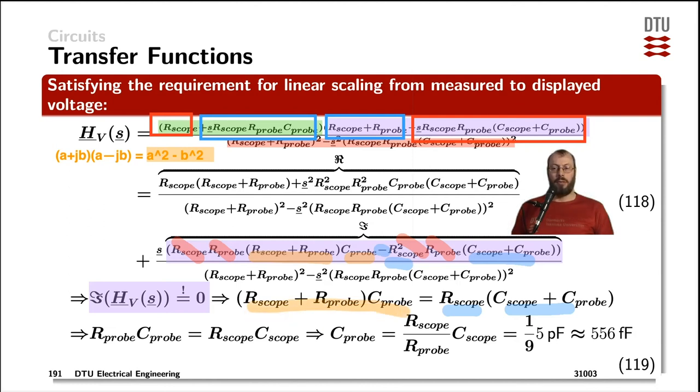Now, in that equation, we have on the left-hand side R scope times C probe here, and on the right-hand side, we have the C probe and the R scope over here, which cancel out. That leaves us on one side with R probe times C probe, and on the other side with R scope times C scope, which is our new equation.